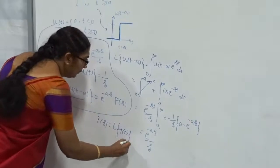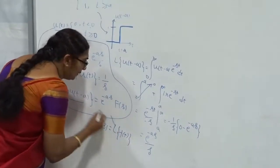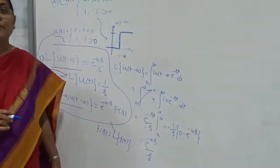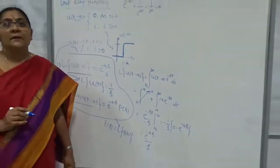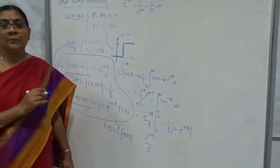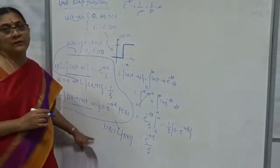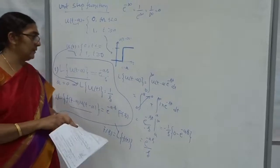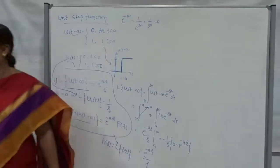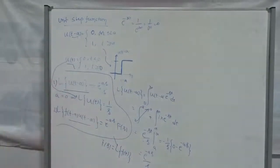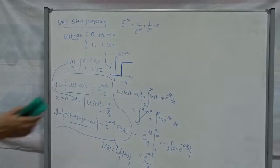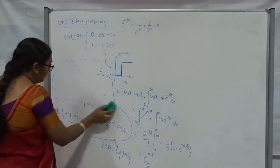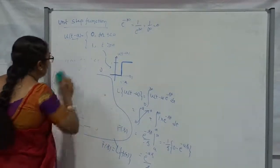Please remember: the Laplace transform of F of (T minus A) into U of (T minus A) is equal to e to the power of minus AS into capital F of S, where capital F of S is nothing but the Laplace transform of F of T. If you want to know the proof of this, refer to my website — I am going to put out my notes there. Now, based on this, I am going to take some problems.